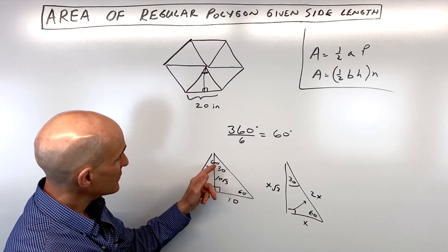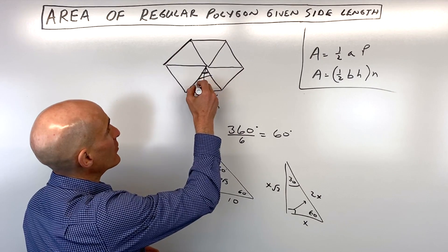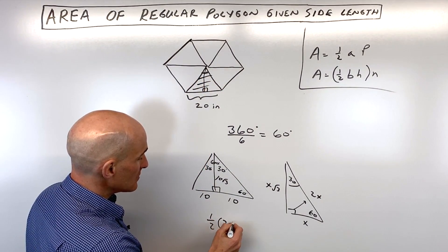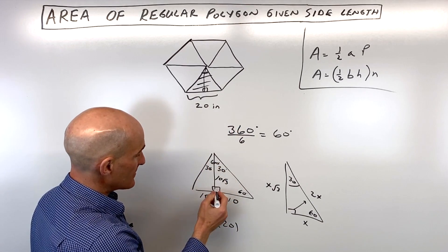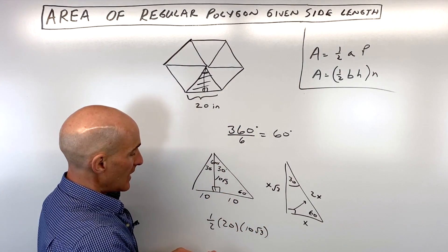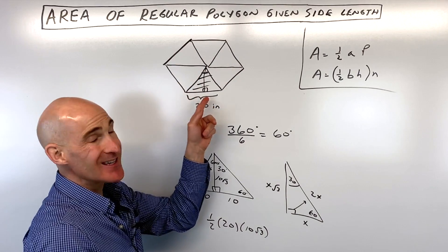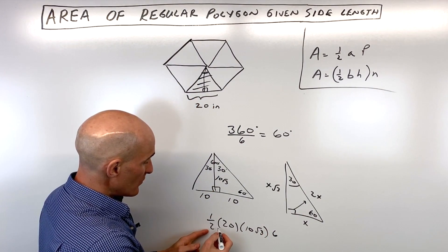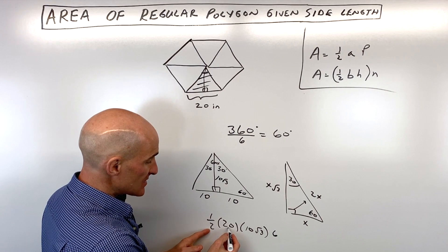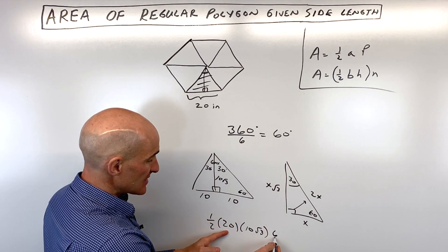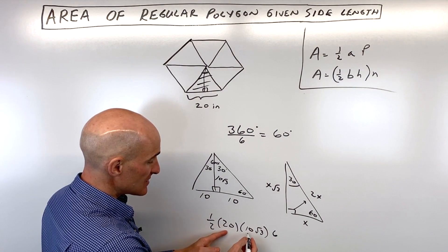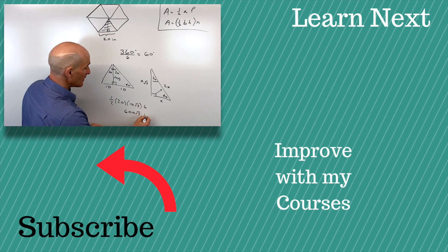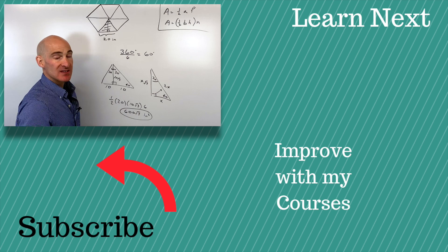If we want to find the area of this triangle, which is this bottom triangle right here, we do area equals one half the base times the height. So the base is 20, times the height, which is 10 square root of three. Then we multiply by six, since we have six of these triangles. So half of 20 is 10, times six is 60, times 10 root three is 600 square root of three inches squared.